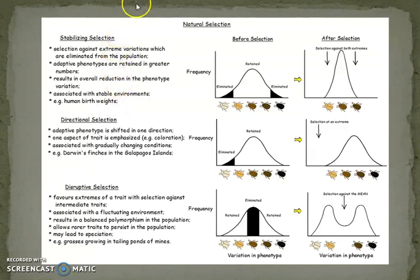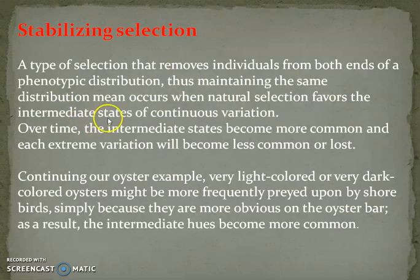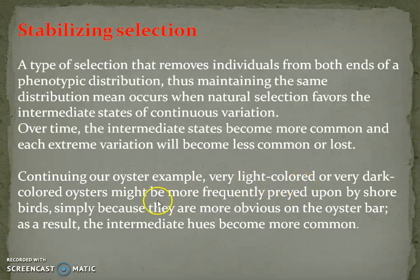An example of stabilizing selection is human birth weight. It favours intermediate phenotypes and eliminates both over-specialised and less-specialised extremes, increasing the intermediate phenotype. It also checks accumulation of mutations in the gene pool. It removes individuals from both ends of the phenotypic distribution, maintaining the same distribution. Continuing the oyster example, very light-coloured or very dark-coloured oysters might be more frequently preyed upon by shorebirds because they are more obvious on the oyster bar. As a result, intermediate hues become more common.